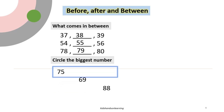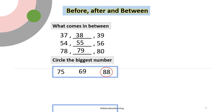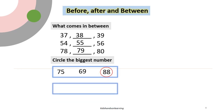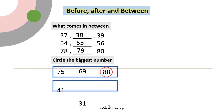Circle the bigger number. 75, 69. 88. 41, 31, 21.